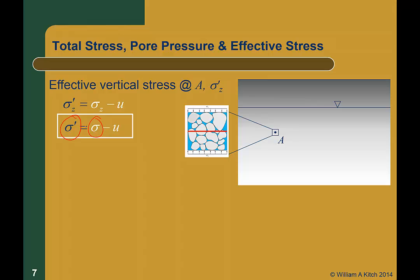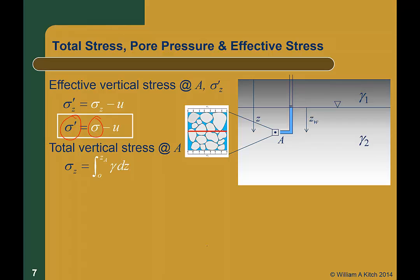So now let's compute the effective stress at A in this example. We will assume A is at a depth z below the ground surface, and at depth zw below the ground water table. We will also assume that our soil has a unit weight of gamma 1 above the ground water table, and gamma 2 below the ground water table. If the ground water is static, and we install a piezometer at A, the water in the piezometer will rise up to the ground water table. The total vertical stress at A is gamma 1 times the quantity (z minus zw) plus gamma 2 times zw.